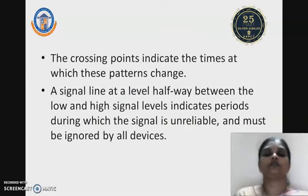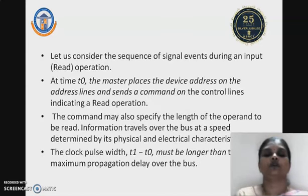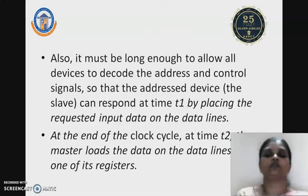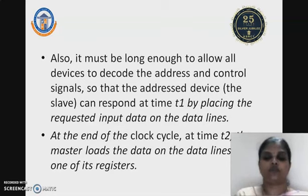The crossing points indicate the time at which signal patterns change. A line at a level halfway between the low and high level signals indicates the period during which the signal is being generated. During a read operation: at time T0, the master places the device address on the address lines and sends a read command on the control lines, also specifying the length of the operand to be read. Information travels over the bus at a speed determined by its physical and electromagnetic characteristics, allowing all devices to decode the address and control signals. The addressed device responds at time T1 by placing the requested data on the data lines, and at the end of the clock cycle at T2, the master loads the data into one of its registers.